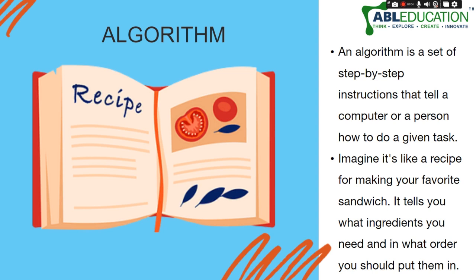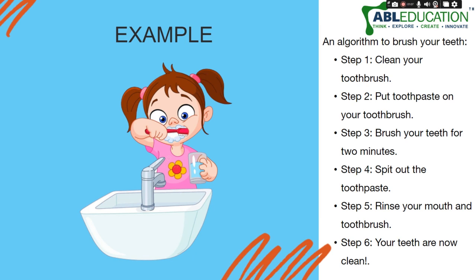Now let us go a bit deeper into algorithm examples. Let me give you another example: cleaning your teeth. Step one, clean your toothbrush. Step two, put toothpaste on your toothbrush. Step three, brush your teeth for two minutes. Step four, spit out the toothpaste. Step five, rinse your mouth and toothbrush — and then your teeth are now clean. Similarly, to make your computer do any task, you first need to define an algorithm — a set of instructions your computer understands.